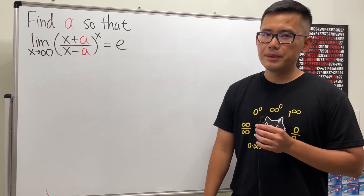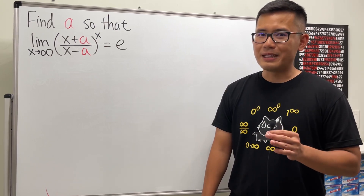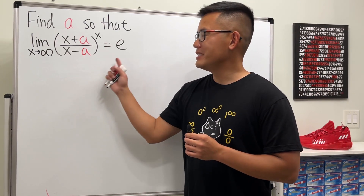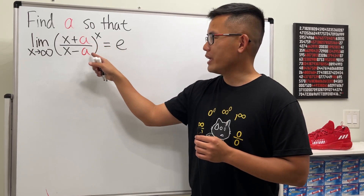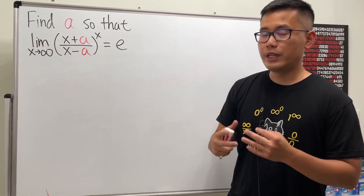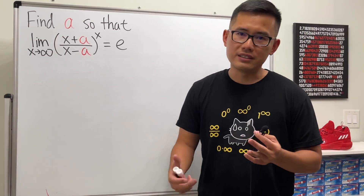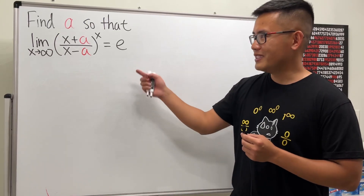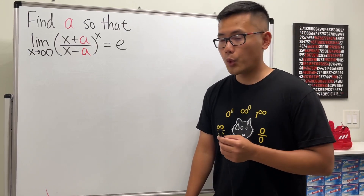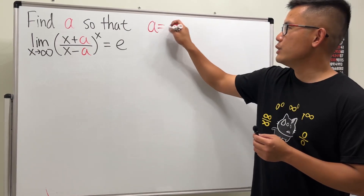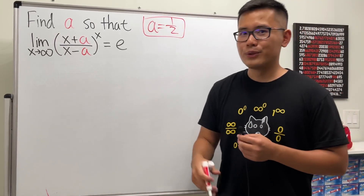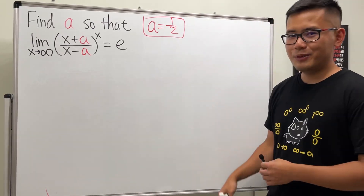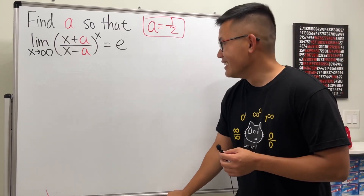Hello ladies and gentlemen, today I have another limit question for you, but this time it's more like solving an equation. We are given that this limit is equal to e, and we're trying to find out what a is. So this is much more interesting because we're not just computing a limit but solving an equation in terms of a limit. Please pause the video and try this first. The answer is a is equal to one half — it's right here, don't skip ahead.